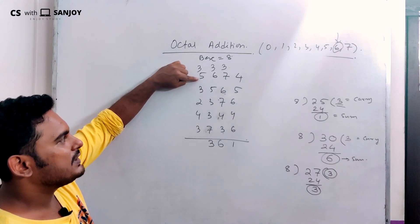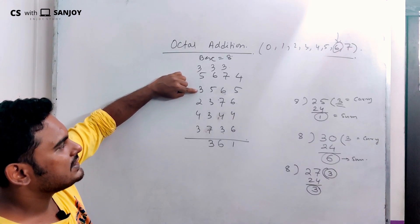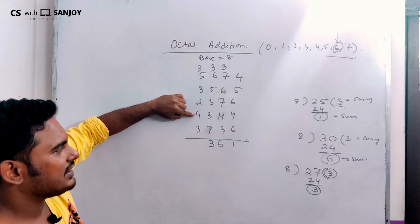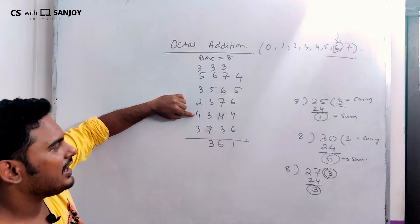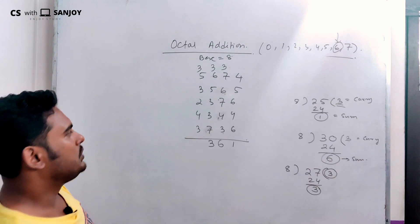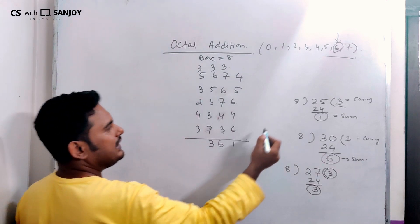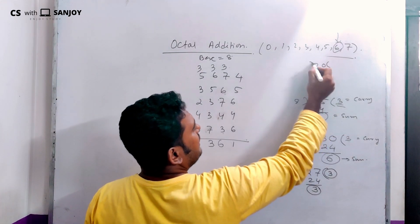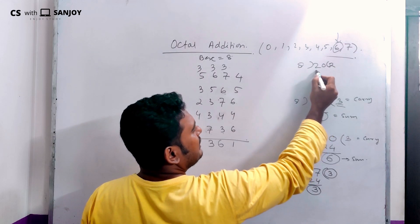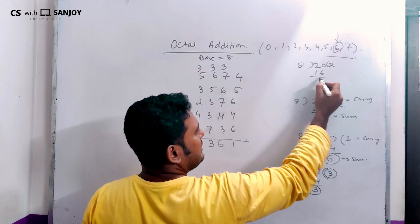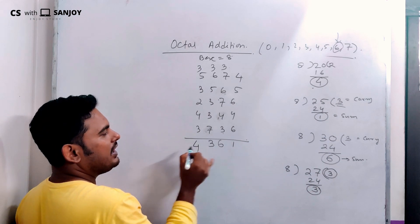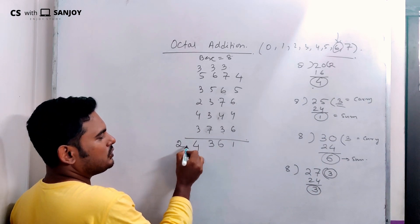Now again: 5 plus 3 is 8, plus 3 is 11, plus 3 is 17, and adding remaining digits gives 20. 20 divided by 8: 2 times 8 is 16, remainder is 4. Sum digit is 4, carry is 2.